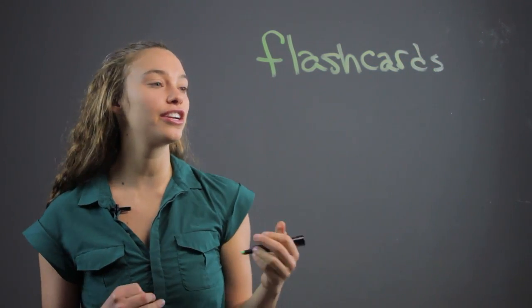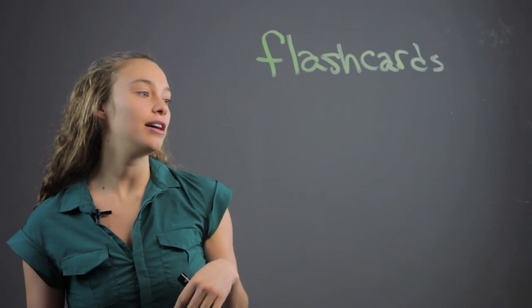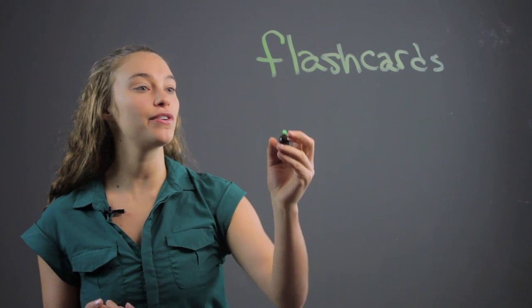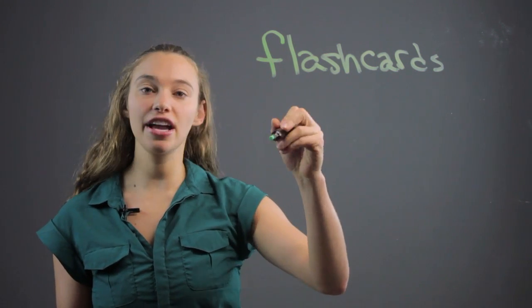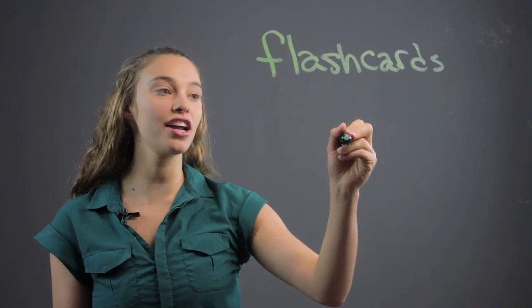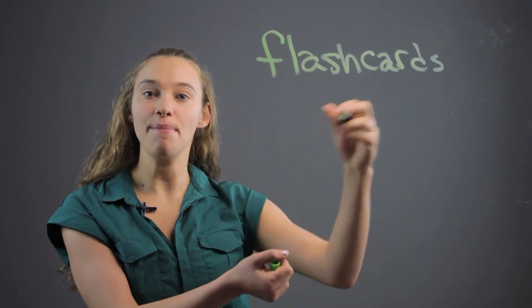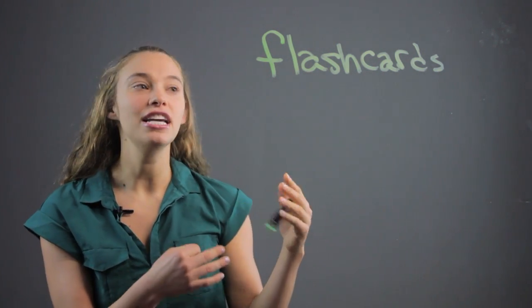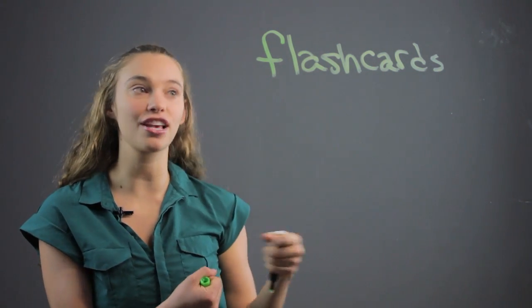So say you're learning like area and volume and all those things for shapes and stuff. You can show area of a circle on one side of the flashcard, and then the other side will be pi r squared. So you'll have to get familiar with it and just testing yourself over and over.